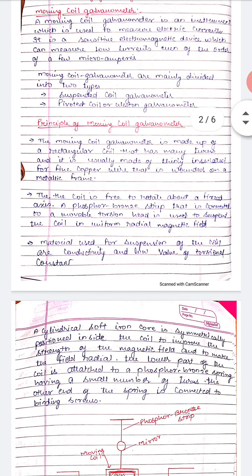The moving coil galvanometer is made up of a rectangular coil that has many turns. It is usually made up of thinly insulated fine copper wire — the copper wire is insulated with plastic wrapping — and it is wound on a metallic frame. The coil is free to rotate about a fixed axis.